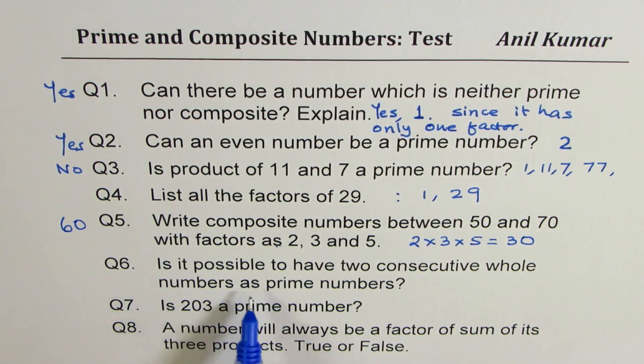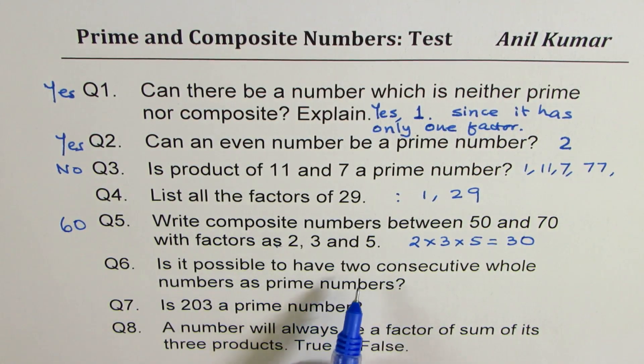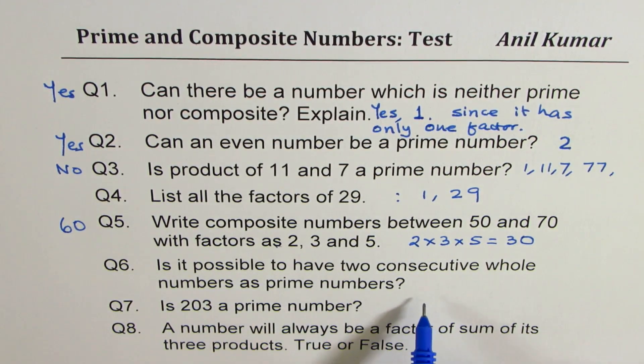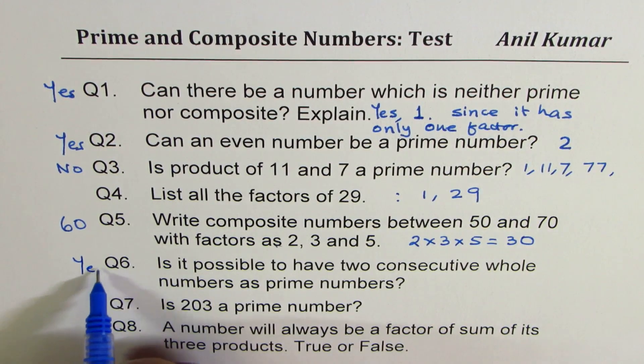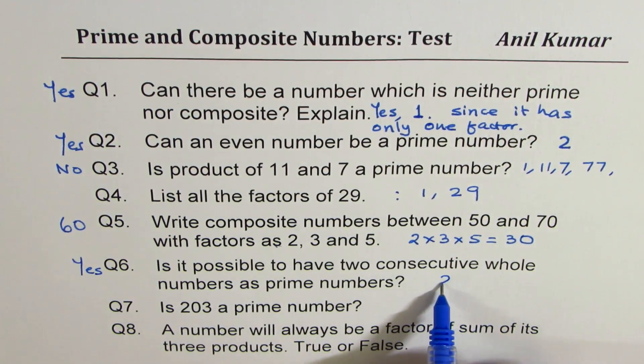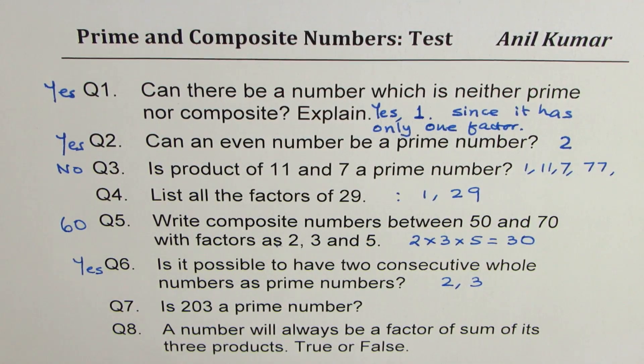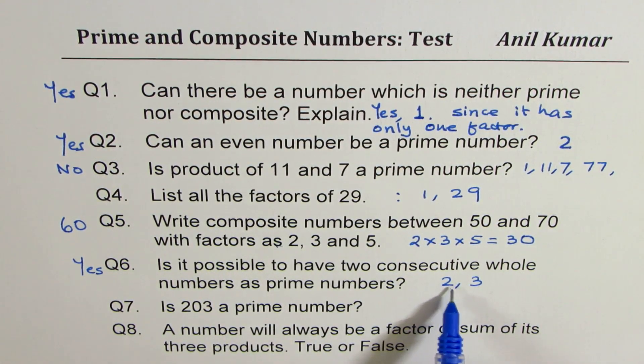Question 6: Is it possible to have two consecutive whole numbers as prime numbers? Yes, it is. What is the example? Number 2 and 3. That is the answer. 2 is the only even number, so we have consecutive numbers as prime numbers.